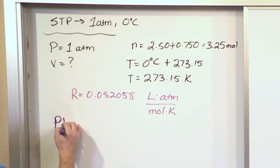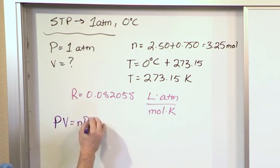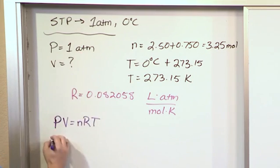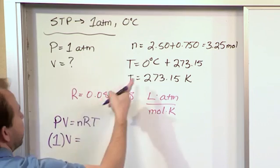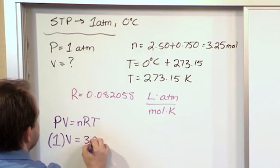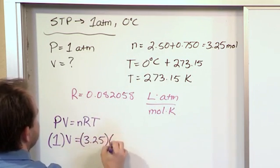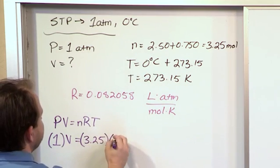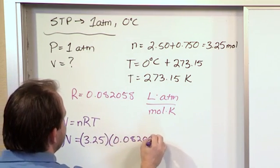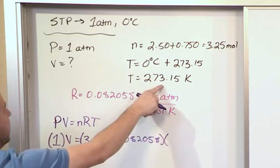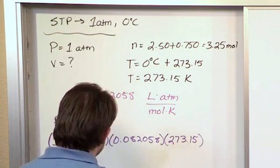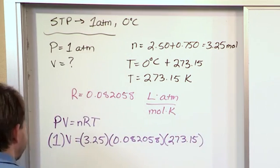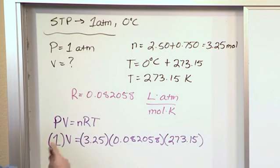So we just go to our friend, PV is equal to nRT. The pressure is one atmosphere, so conveniently that's just a number one. The volume is what we're trying to figure out, so that's easy. The number of moles is 3.25. The universal gas constant in the proper units is 0.082058. And Kelvin temperature here is 273.15. So this one's really easy because on the left-hand side we just have 1 times V, which is just...